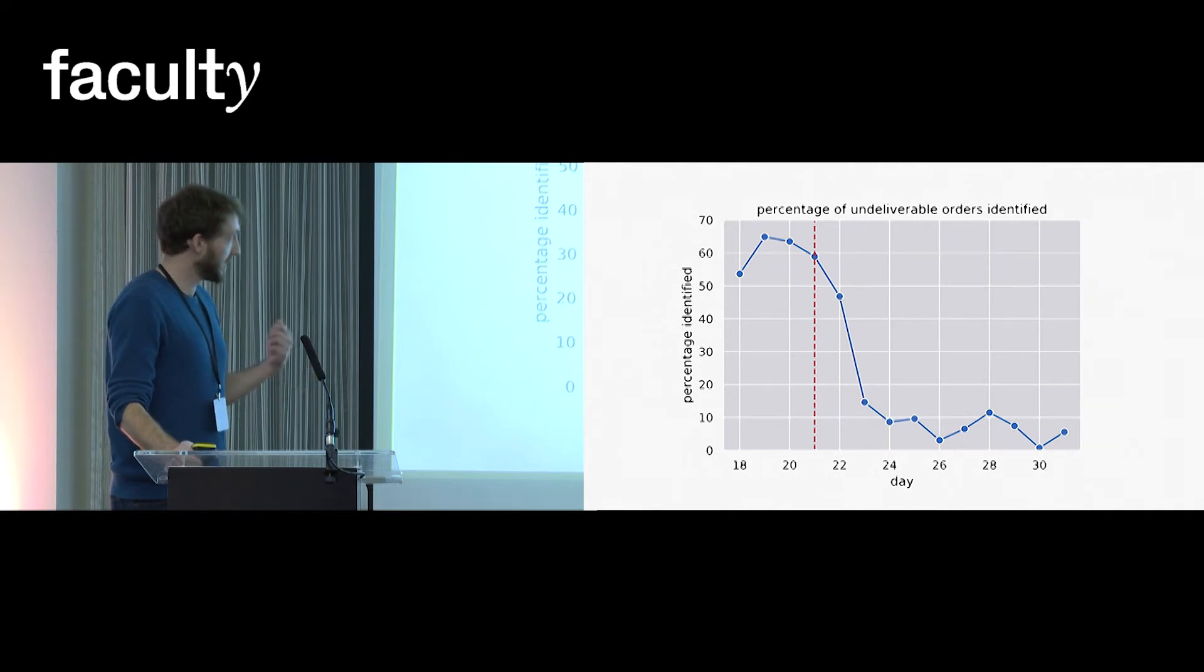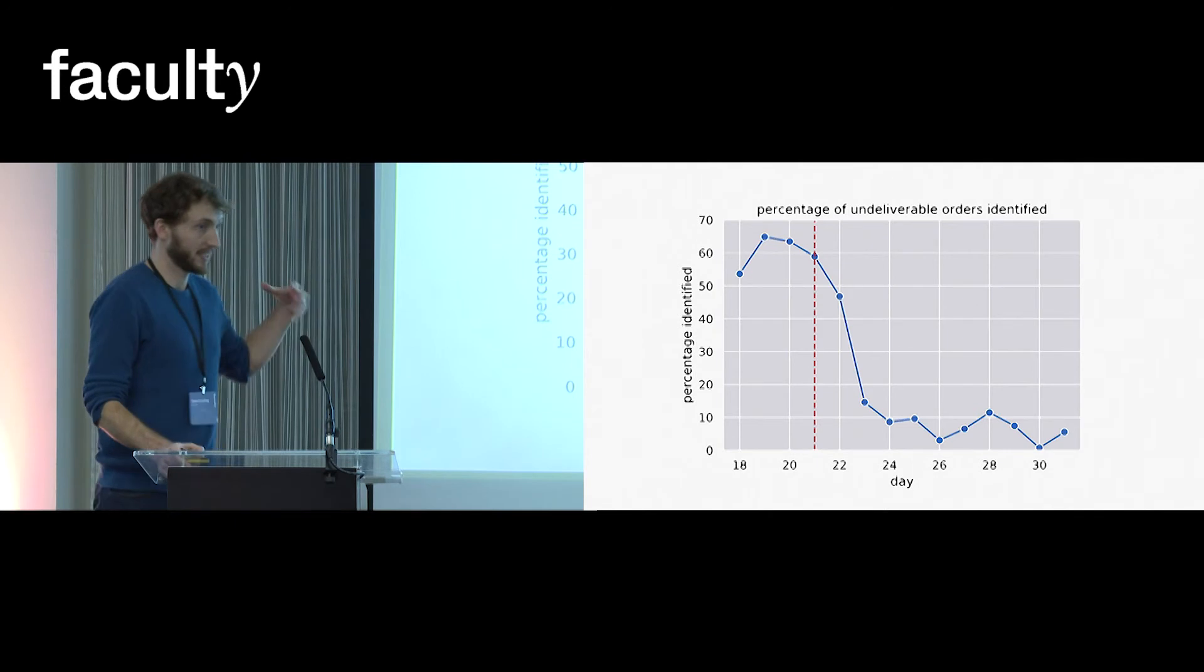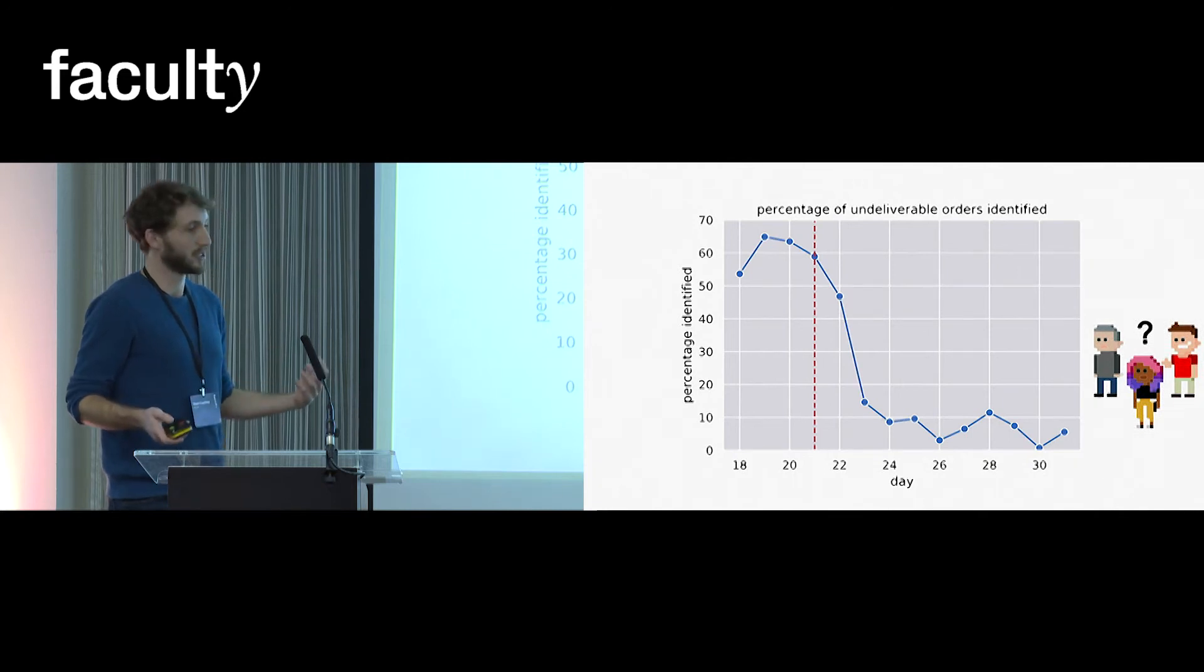So why has this happened? Now, this is a common problem in data science where models suddenly stop working. And typically, the reason is that your system that you're trying to make predictions about has changed. So that's what I was interested in. I was interested in, had these customers changed their behavior since the 21st?